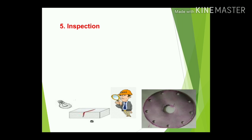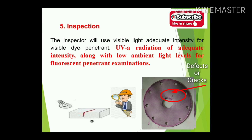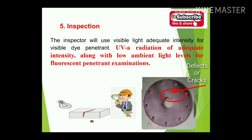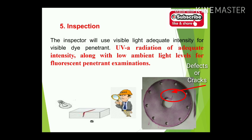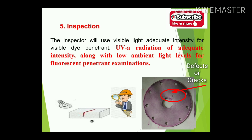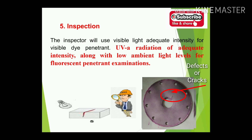The fifth step is inspection. The inspector uses visible light of adequate intensity for visible dye penetrant, or ultraviolet radiation of adequate intensity with low ambient light for fluorescent penetrant examination. Under ultraviolet light, the developer reacts with the penetrant and changes the color on the top surface of the material, allowing easy identification of cracks present on the surface of ceramics, ferrous, or non-ferrous materials.